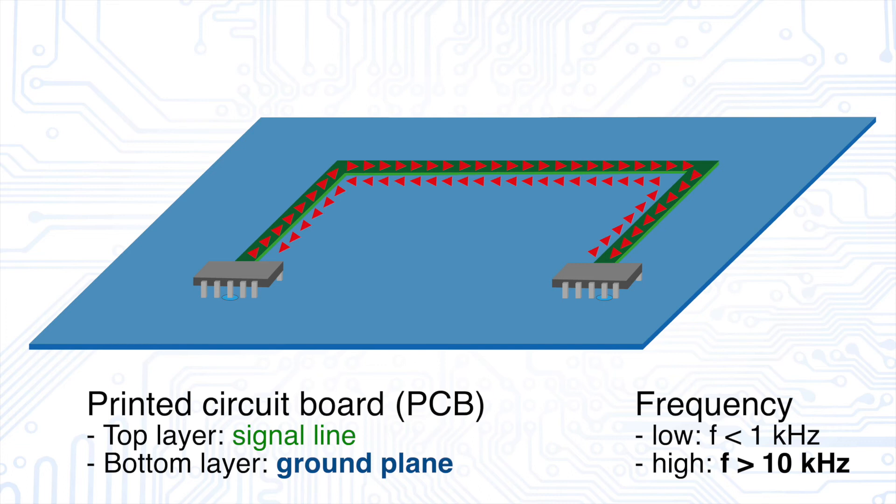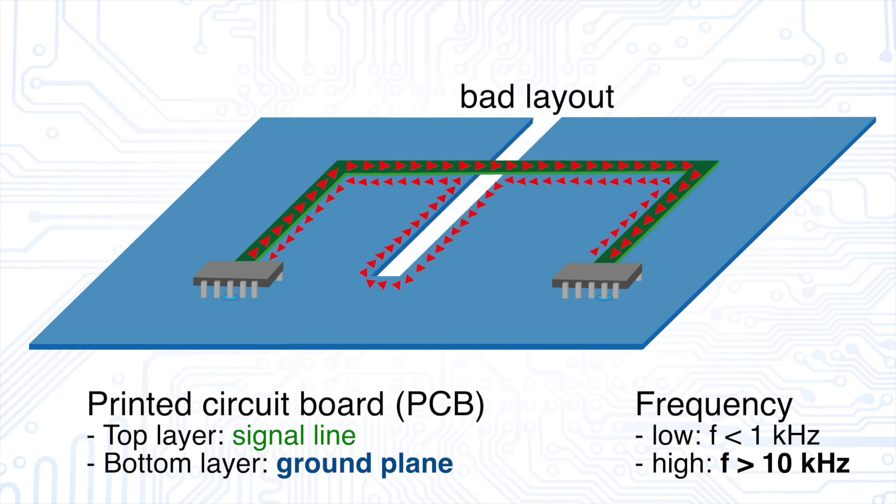This can become a problem if the path is somehow blocked, because then the electrons would have to take a more difficult route. In such a scenario, it would not be the signal line that causes EMC problems. Instead, a voltage drop across the ground plane would occur, resulting in common mode radiation. So, it's best to just avoid such unnecessary structures.